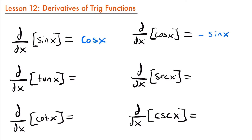The derivative of tangent x is secant squared x, and the derivative of secant x is secant x times tangent x. I like to pair these two together, just like sine and cosine. Notice how tangent and secant both appear in each other's derivatives — that's something to keep in mind as you memorize these.